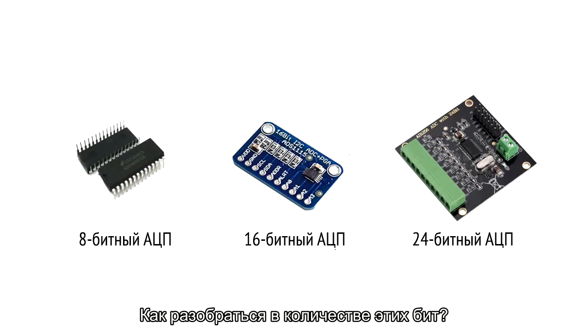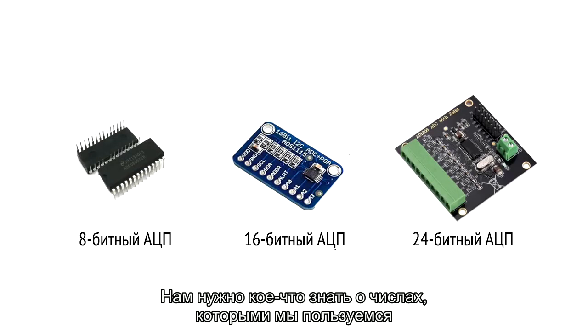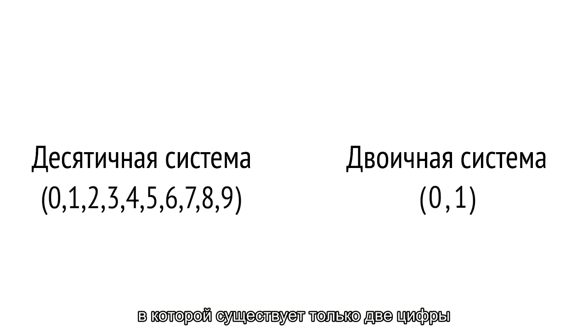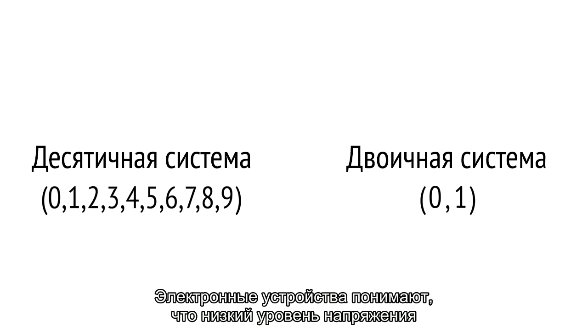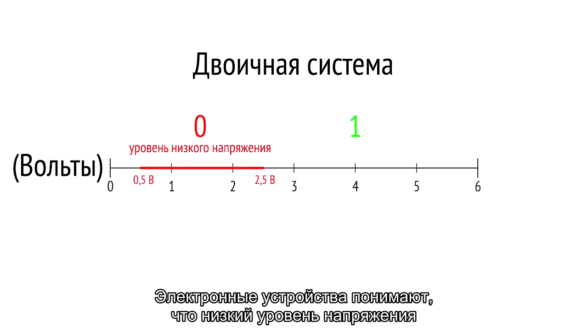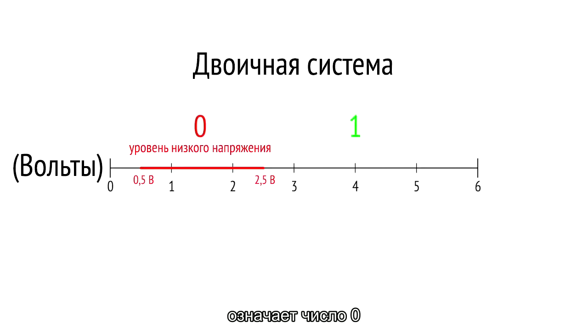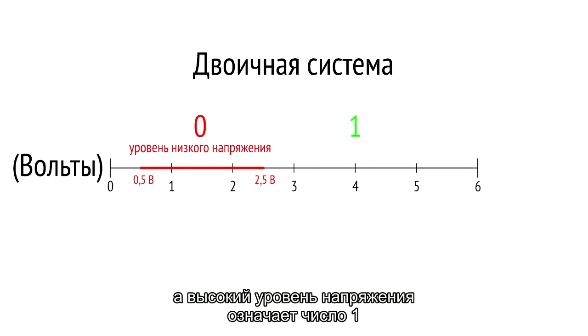To understand these bit numbers, we need to know a little about the number systems we use. In real life we use the decimal system, which contains 10 digits from 0 to 9. But the electronic world uses the binary system, where just two digits exist: 0 and 1. Electronic devices understand that a low voltage level means 0 and a higher voltage level means 1.